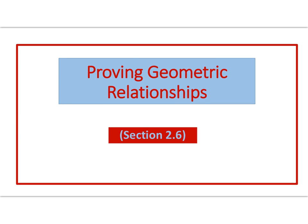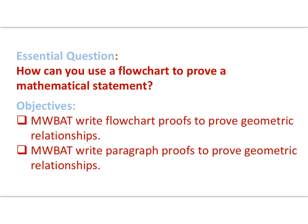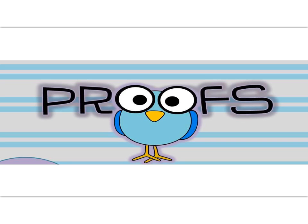Hi there, mathematicians. Let's get started with section 2.6, the final section of unit 2: Proving Geometric Relationships. Our essential question is how can you use a flow chart to prove a mathematical statement? Mathematicians will be able to write flow chart proofs and paragraph proofs to prove geometric relationships, continuing to use our inductive reasoning skills to make observations.